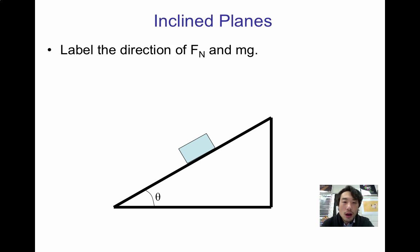Let's get started. The first thing that we want to do is to draw the free body diagram. We have the normal force going perpendicular to the surface of the ramp, and we have the weight, also known as the force of gravity, or mg going straight down.